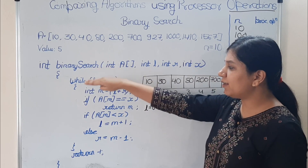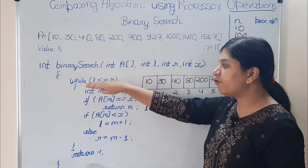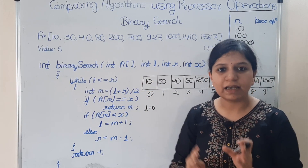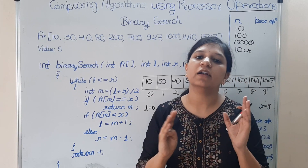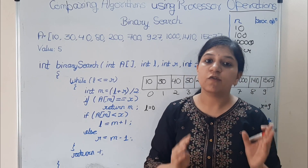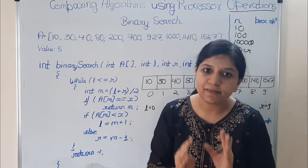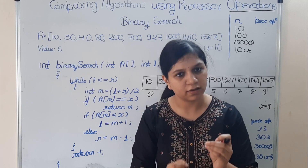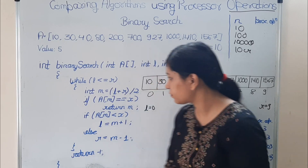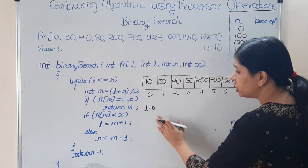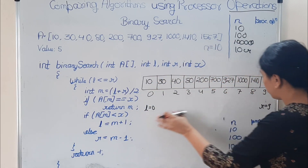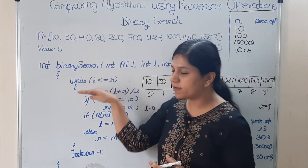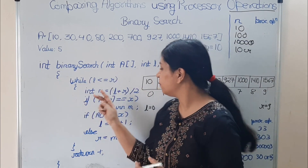Inside the function, we first compare the values of l and r and start a loop: while l is less than or equal to r, we run this loop. Initially l is 0 and r is 9, so we go inside the loop.